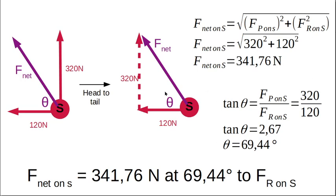So now how will we find the direction? We're going to say tan is opposite over adjacent, so 320 over 120. Fiddle with your calculator, you're going to get 69.44 degrees. So your final answer has to state the net force is 341.76 newtons, and this is at 69.44 degrees to the force R on S.